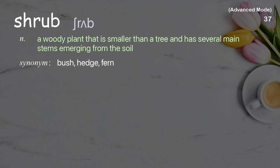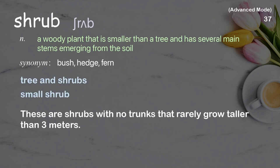Shrub: a woody plant that is smaller than a tree and has several main stems emerging from the soil. Examples: trees and shrubs, small shrub. These are shrubs with no trunks that rarely grow taller than 3 meters.